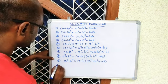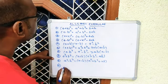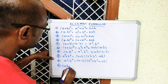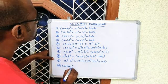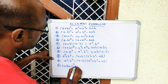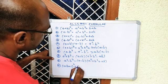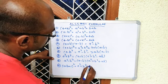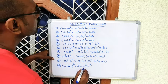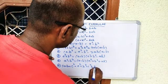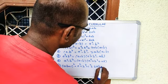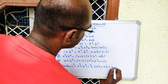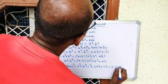And lastly, number ten: (a + b + c)² = a² + b² + c² + 2ab + 2bc + 2ca.